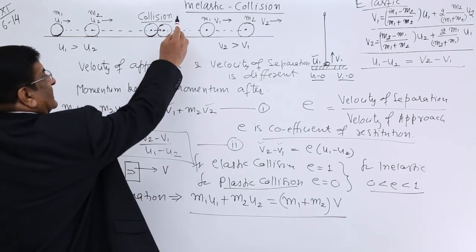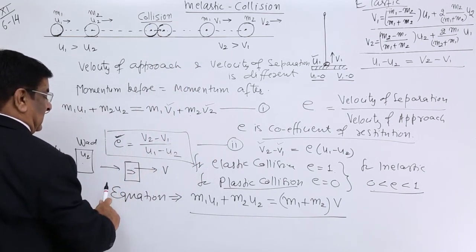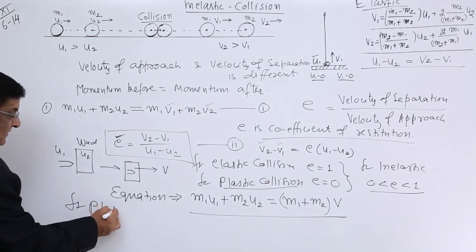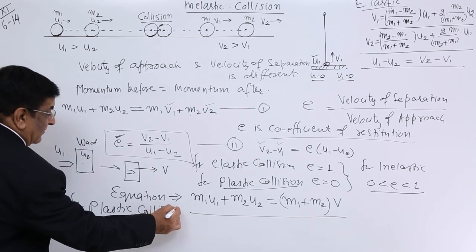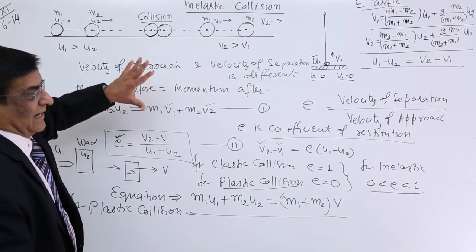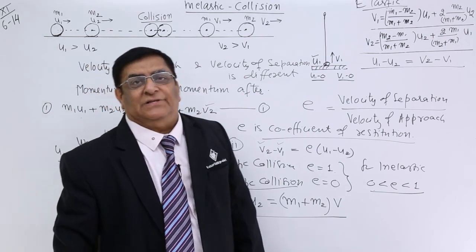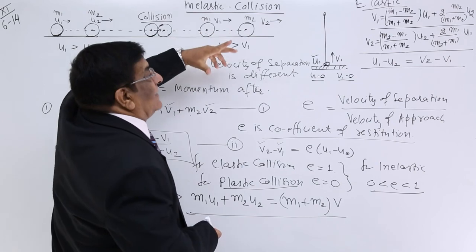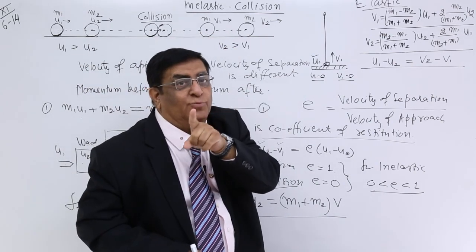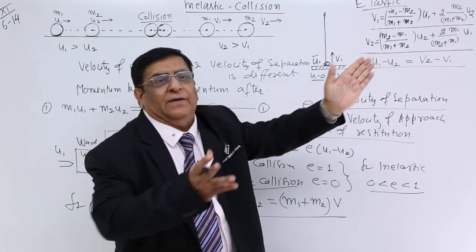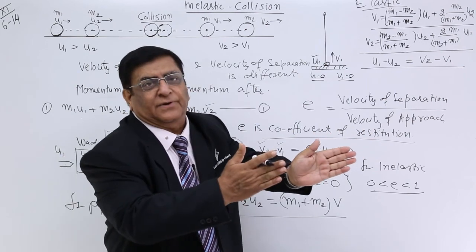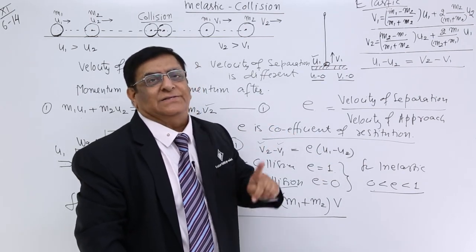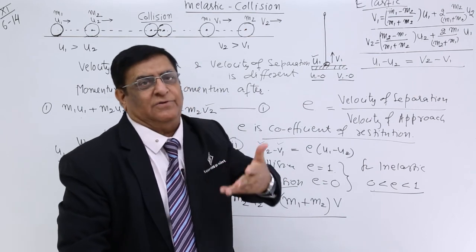So, what we have covered is partially inelastic collision and totally inelastic (plastic) collision. In the next lecture, we will see what happens when the bodies are not moving in one straight line — for example, a striker hitting a coin in carrom board, where they move in different directions. We need a two-dimensional plane to explain these velocities, which is known as collision in two dimensions. Thank you.